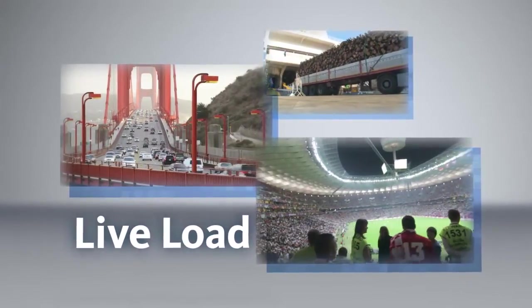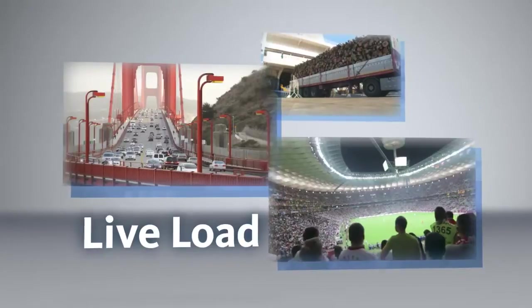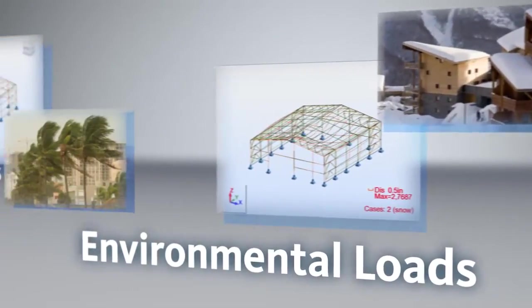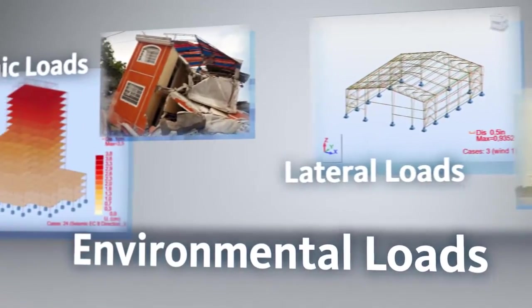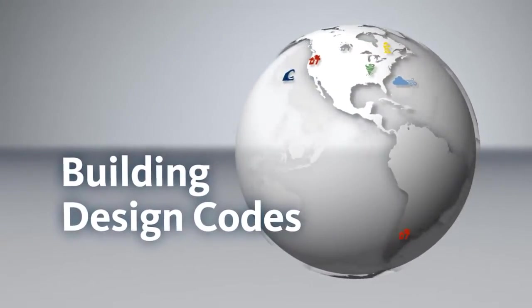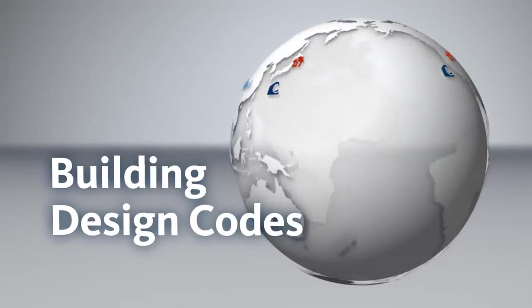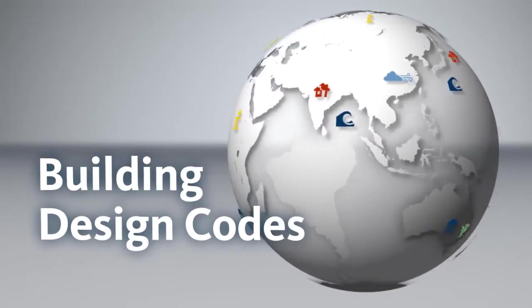Examples include building occupants, equipment, or vehicles crossing a bridge. Environmental loads are generally caused by natural phenomena such as snow and lateral loads such as wind and earthquakes. These loads are documented locally according to a set of building design codes specific to each country or region.